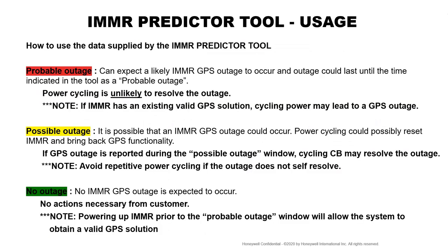How do you use the data supplied by the IMMR predictor tool? As indicated, red is to stop, yellow is to exercise caution, and green is good to go. Red indicates probable outage — you can expect a likely IMMR GPS outage to occur, and the outage could last until the time that the tool indicates a probable outage. Power cycling is very unlikely to resolve the outage. Please note that if your IMMR has an existing valid GPS solution, cycling power may lead to a GPS outage.